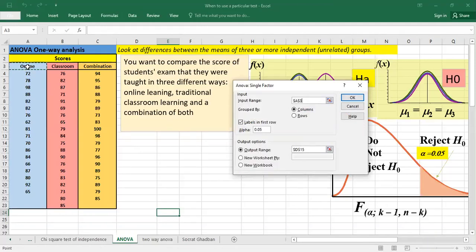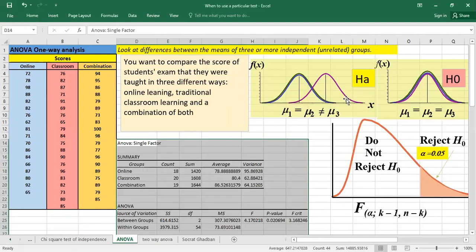We have to select the data here, and then because labels we are choosing the labels we put alpha 0.05 and also we select where we want to have our results and we click on okay.